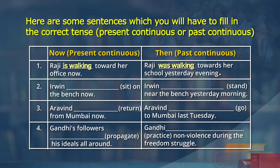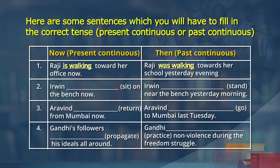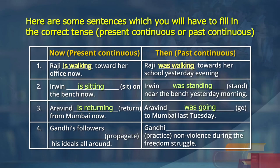Raji is walking towards her office now. In past continuous: Raji was walking towards her office yesterday evening. Now, the same way - present continuous then past continuous. Irvin is sitting on the bench now. Past continuous: Irvin was standing near the bench yesterday morning. Arvind is returning from Mumbai now. Past continuous: Arvind was going to Mumbai last Tuesday.